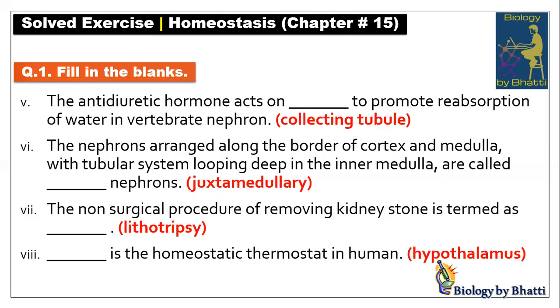Fifth fill in the blank: the anti-diuretic hormone acts on dash to promote reabsorption of water in vertebrate nephrons. The anti-diuretic hormone's target is the collecting tubule or collecting duct, so it should be collecting tubule.